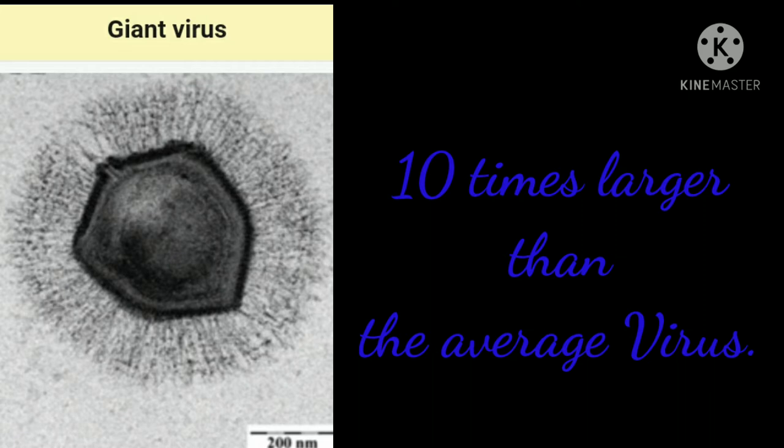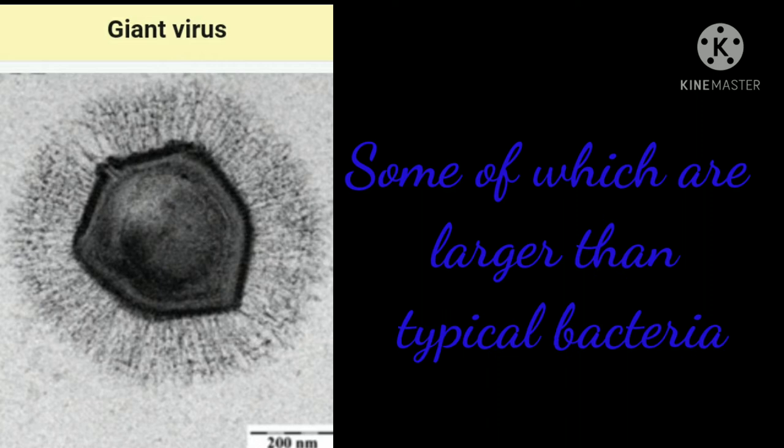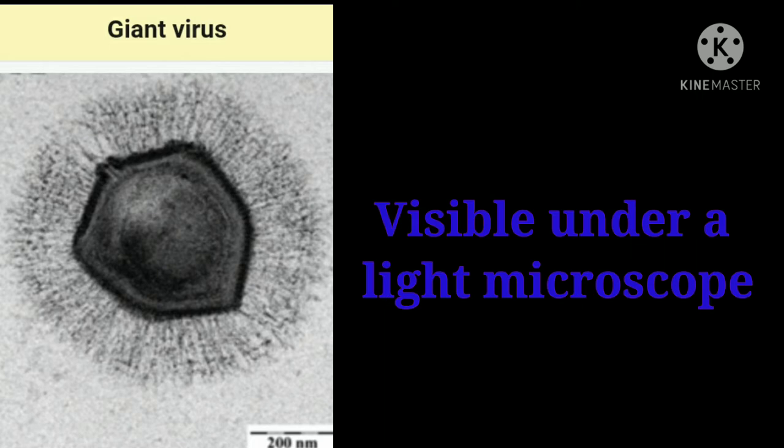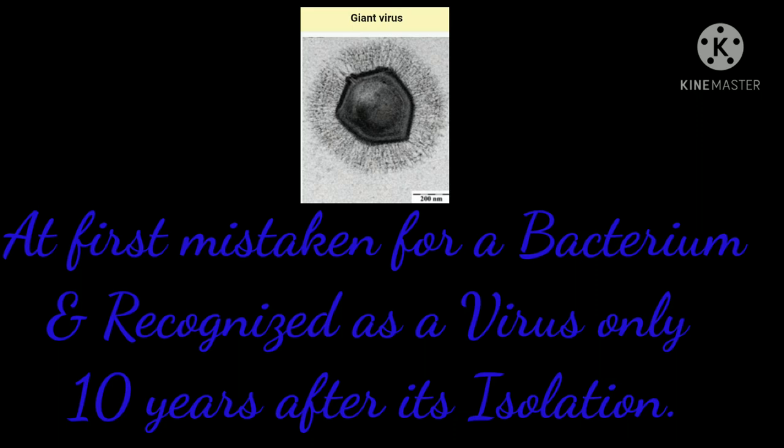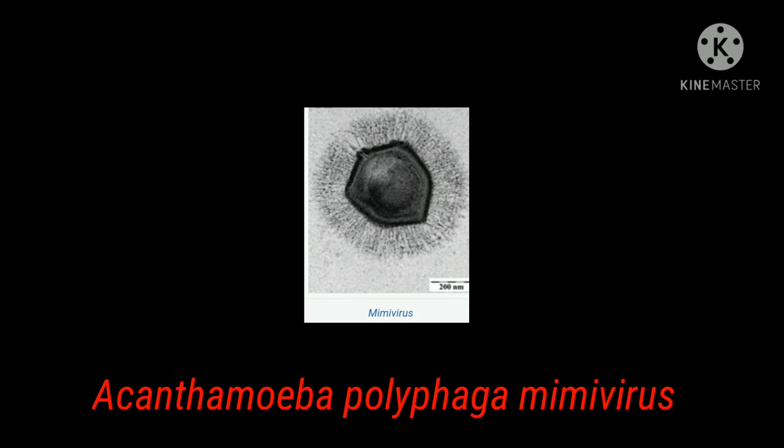Giant viruses are about 10 times larger than the average virus, some of which are larger than typical bacteria with extremely large genomes. Giant viruses are visible under a light microscope. The giant virus was at first mistaken for a bacterium and recognized as a virus only 10 years after its isolation.